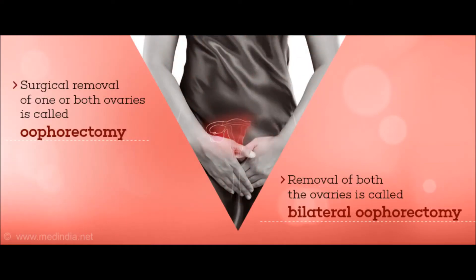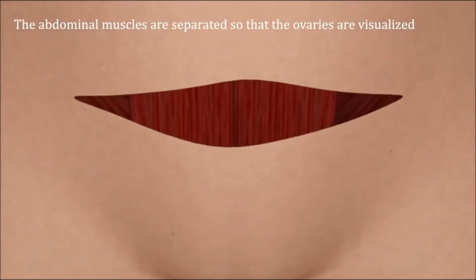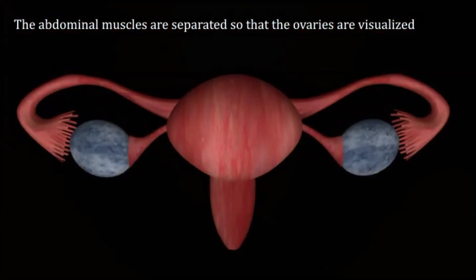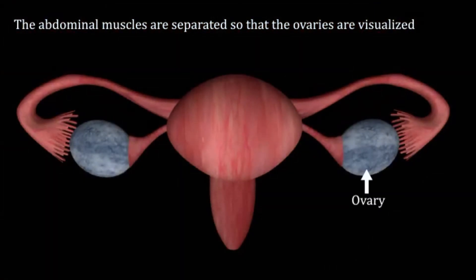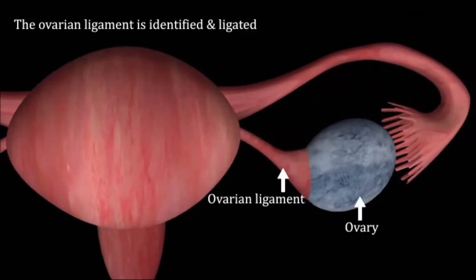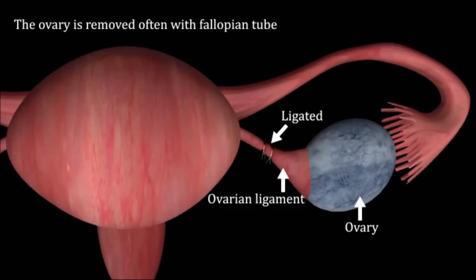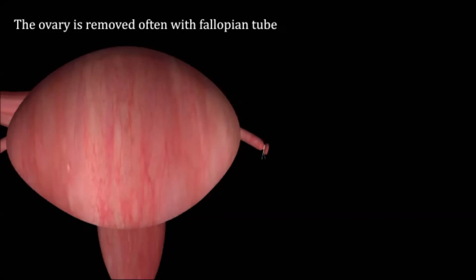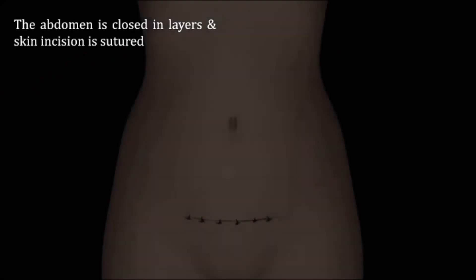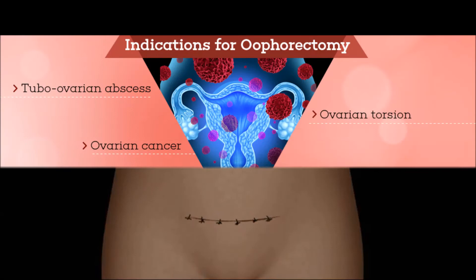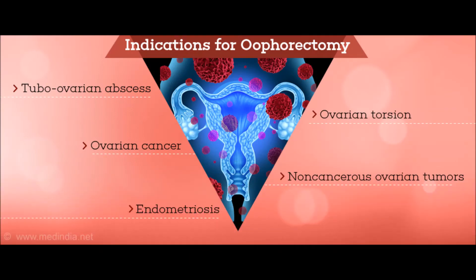Oophorectomy is the surgical removal of one or both ovaries. Removal of both ovaries is called bilateral oophorectomy. The abdominal muscles are separated so that the ovaries are visualized, the ovarian ligament is identified and ligated, and the ovary is often removed with the fallopian tube. The abdomen is closed in layers and the skin incision is sutured.